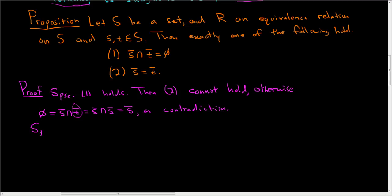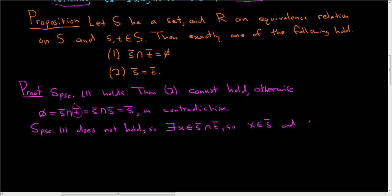Now suppose (1) does not hold — the claim is that (2) holds. If (1) does not hold, that means the intersection is not empty, so there exists an element x in the intersection. That means x is in the equivalence class of s and x is in the equivalence class of t. So x is related to s, and x is related to t.